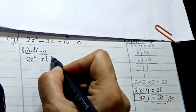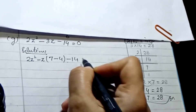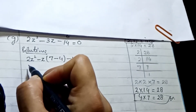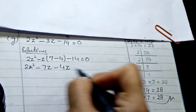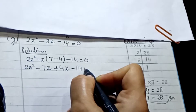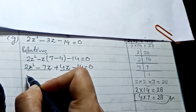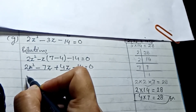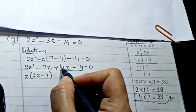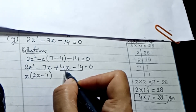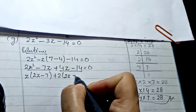We write 2z² then take minus z outside the bracket with 7 minus 4 inside, then minus 14 equals 0. Multiplying gives minus 7z plus 4z minus 14 equals 0. Making two pairs: from the first pair take z as common, leaving 2z minus 7. From the second pair take 2 as common, leaving 2z minus 7.